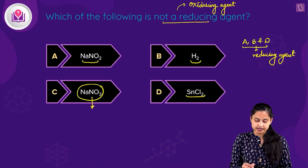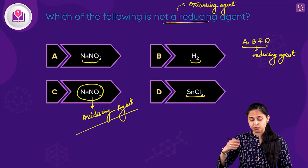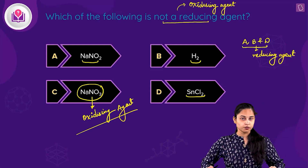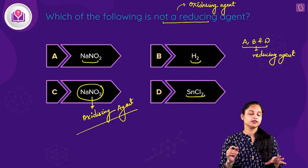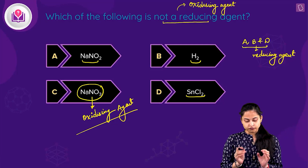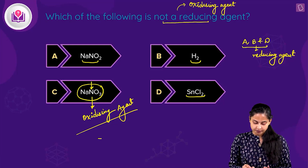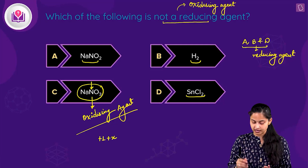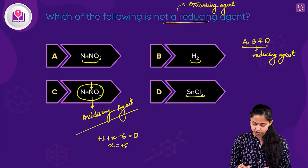Rather than just memorizing, let's calculate oxidation states. For NaNO₃: +1 + X + 3(−2) = 0, so X = +5 — nitrogen is in the +5 oxidation state. For NaNO₂: +1 + X + 2(−2) = 0, so X = +3. Hydrogen is in 0 oxidation state. For SnCl₂: X + 2(−1) = 0, so X = +2 — tin is in the +2 oxidation state.